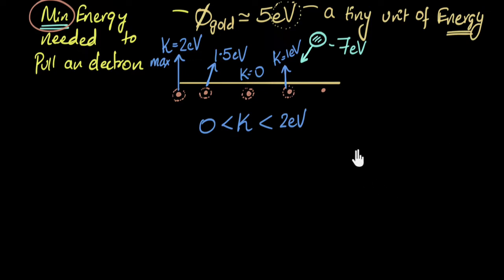Now just to check our understanding, let's do one more quick problem. Let's say we take the metal cesium. It turns out that the work function of cesium is somewhere around two electron volts. And let's say we shine the same light, which has the same photon strength, seven electron volts. Can you pause and think about what would be the kinetic energy range in this case?